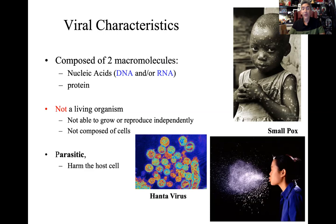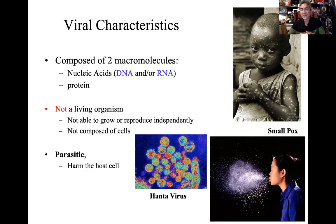If you remember from Biology 1306, there are four macromolecule categories: nucleic acids, proteins, carbohydrates, and lipids. But viruses are only going to contain two of those. We're missing lipids, so we're missing the ability to make a phospholipid bilayer. We're also missing carbohydrates for short-term energy and cellular marking. So a lot of things are incomplete when we talk about viruses.